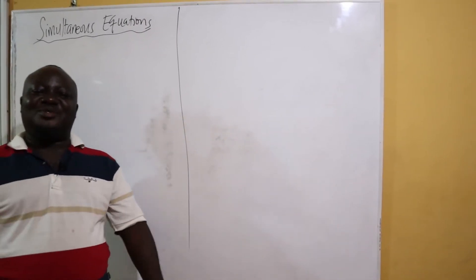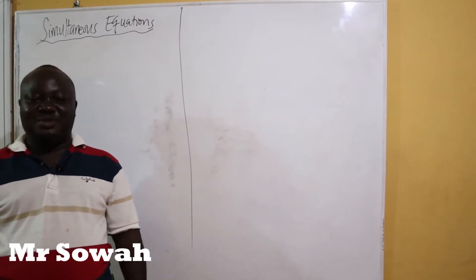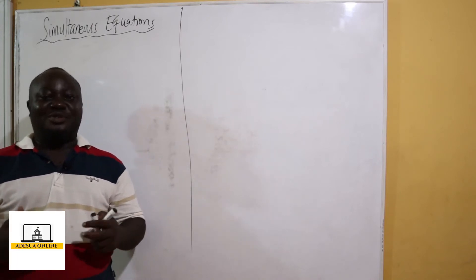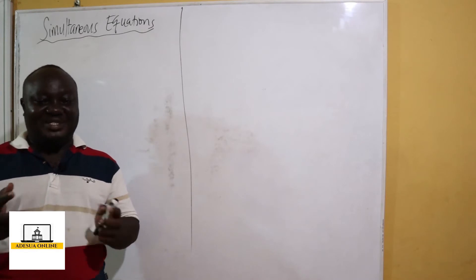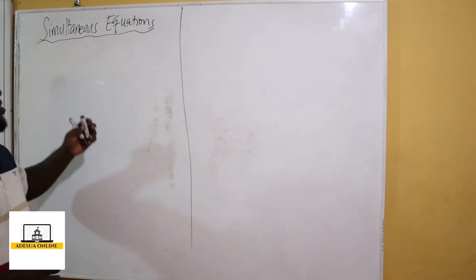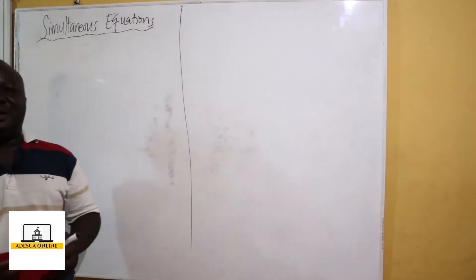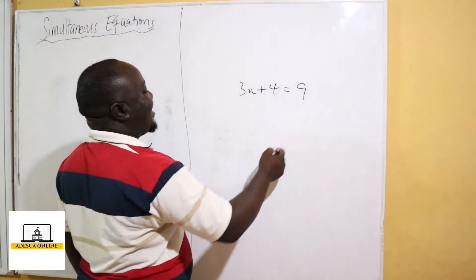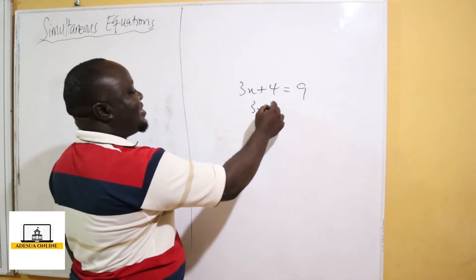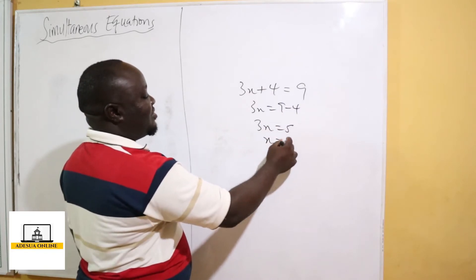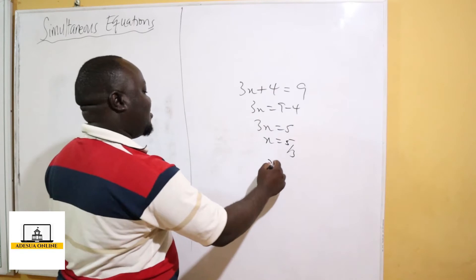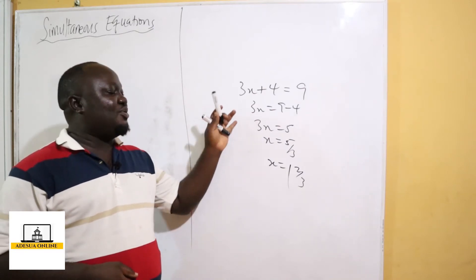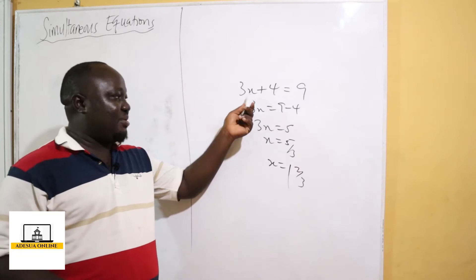Students, we are going to continue our lesson by studying simultaneous equations. You are all very familiar with this topic because it's very common. When we talk about simultaneous equations, we are talking about having two variables x and y. Earlier, if we have 3x plus 4 equals 9 and we are asked to solve for x, we get 3x equals 5, so x equals 5 over 3. This is an equation with only one variable.